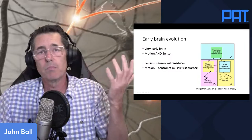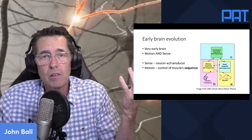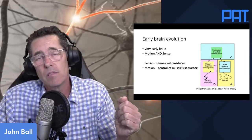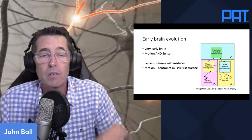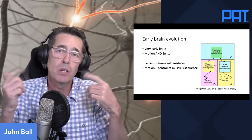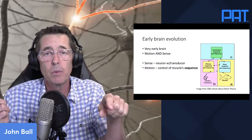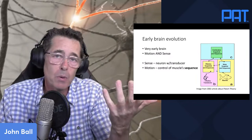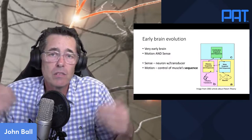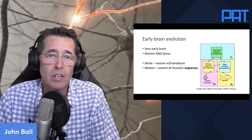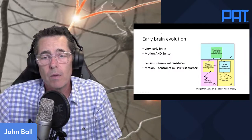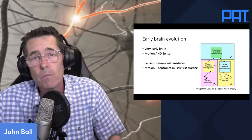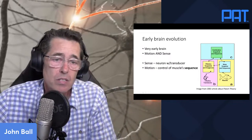Think of it as a primordial ocean — things floating around. Suddenly there's an animal with a sense of smell, control of muscles, and something controlling that. An animal that could successfully navigate to something it wants to eat or move away from a predator is going to survive better than ones just sitting there. The principle that a very simple brain works off one sense and motor control then allows the evolutionary process to continue.